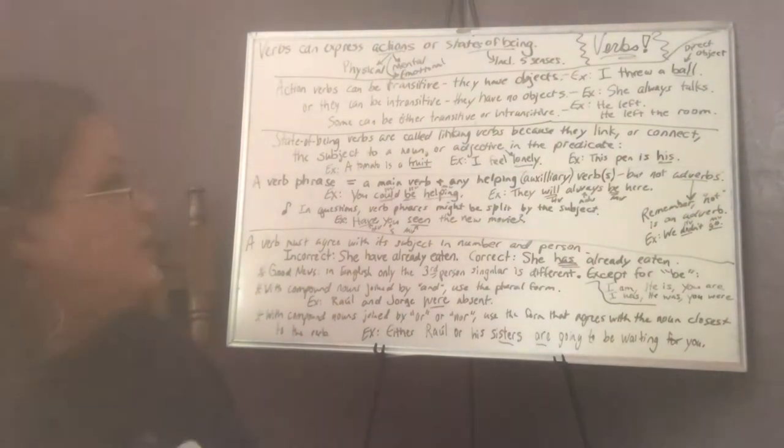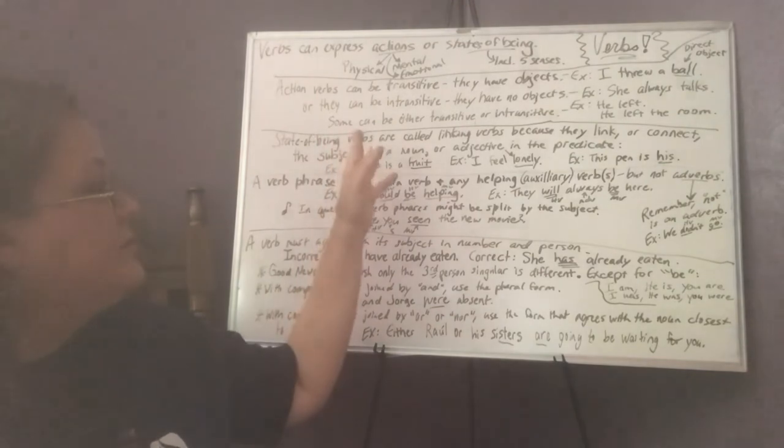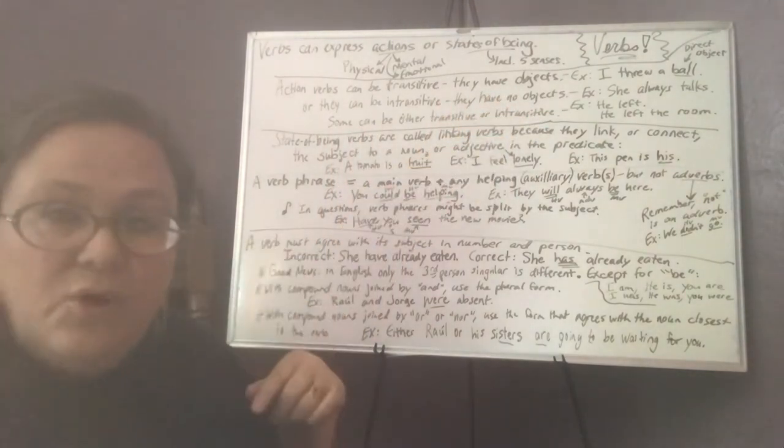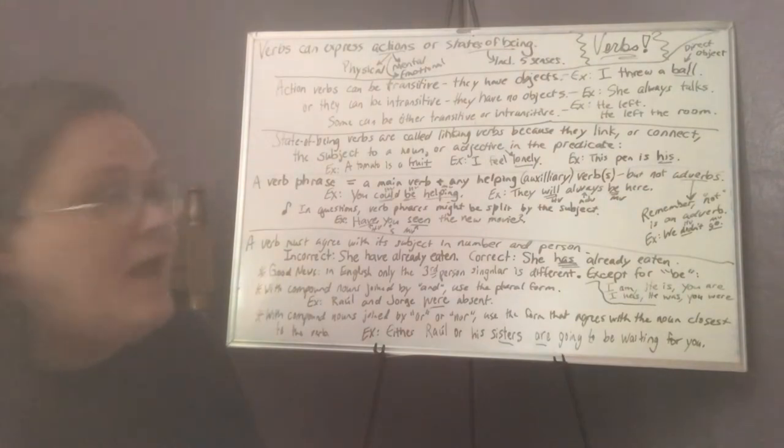But action verbs can be transitive or intransitive. Transitive verbs have no objects. For example, I threw a ball. The action is directed from me to the ball. So there's a direction of action toward an object.